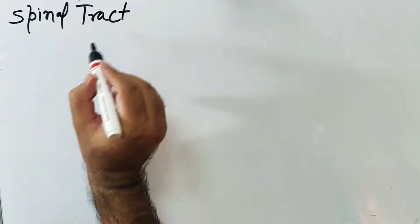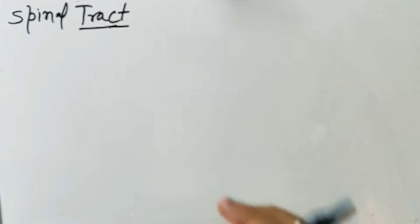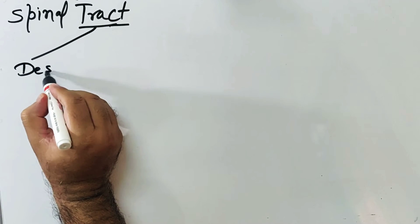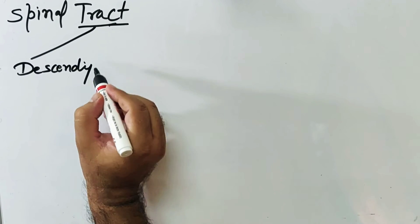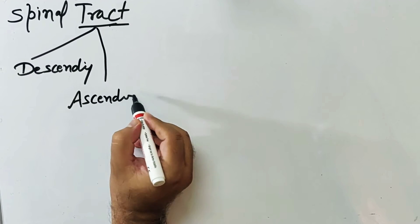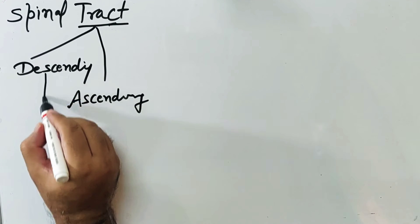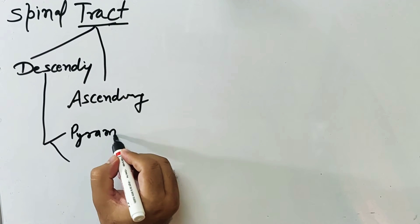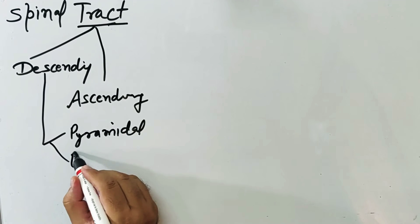We will discuss the anatomy of the spinal tract. A tract is a collection of nerve fibers in the central nervous system. It can be divided into descending tract and ascending tract. The descending tract can be further divided into pyramidal tract and extrapyramidal tract.